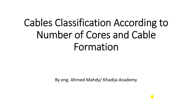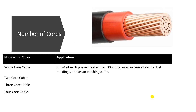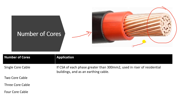In this lesson we would like to classify our cables according to number of cores and the cable formation types. The first type is the single core, or one core cable. You can see that one core is made of a group of wires, a group of conductors — one, two, three, four — all of these conductors carry electric current and together form one big core, known as a single core cable with its insulation and sheath.